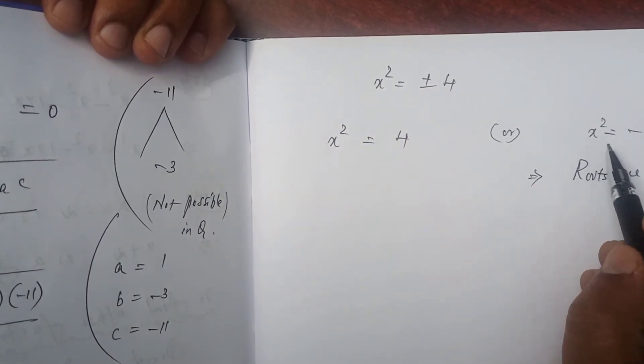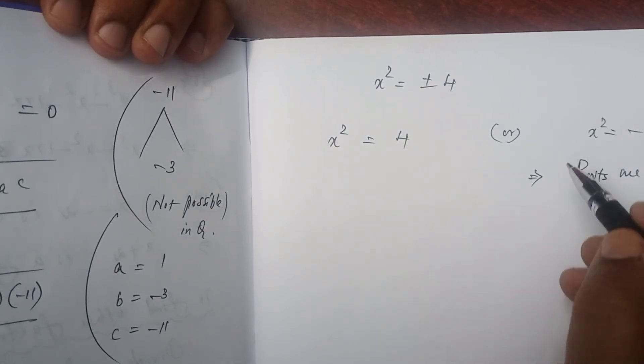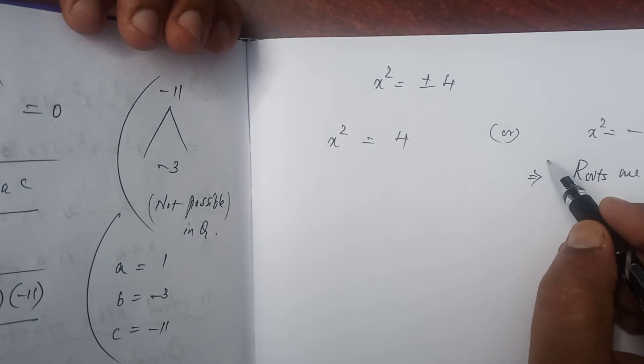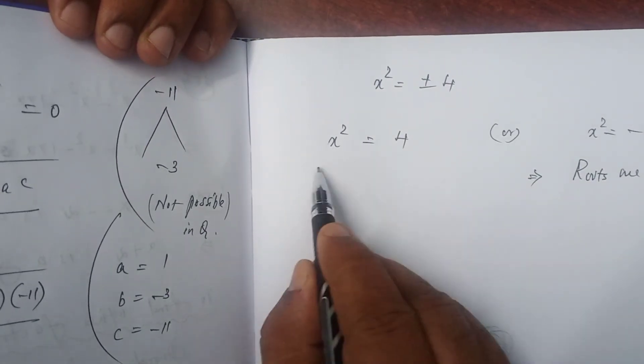Once again, if x² is negative, x will be unreal roots. But you are asked to find only real roots. So you have to consider x² = 4.